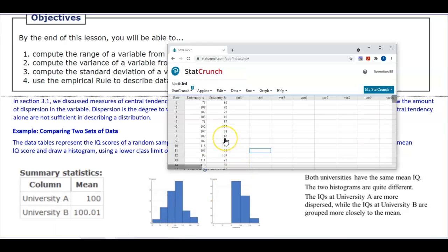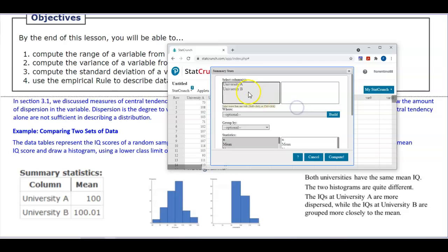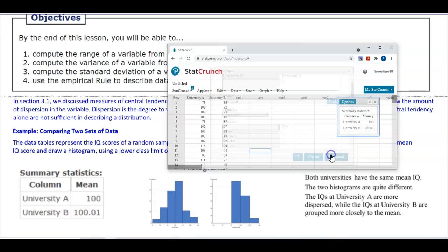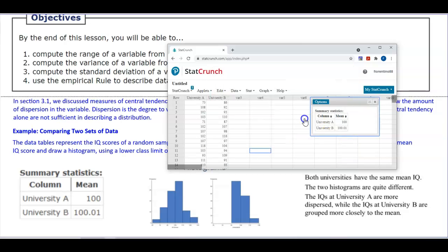I'm going to open this data up in StatCrunch. The first thing we're going to do is we want to take a look at the mean. We're going to select Stat, go to Summary Stats, go to Columns. We want to highlight both University A and University B, and all we want to do is find out what the mean is. We can see here that University A has a mean of 100, and University B has a mean of 100.01, which if we round it to one decimal place, would be 100.0.